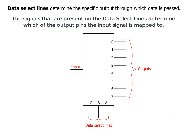Data select lines determine the specific output through which data is passed. The signals that are present on the data select lines determine which of the output pins the input signal is mapped to.